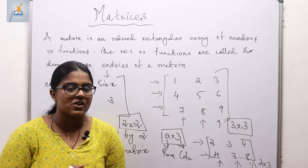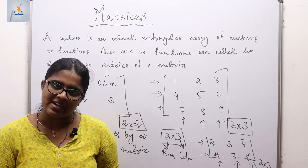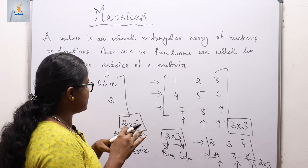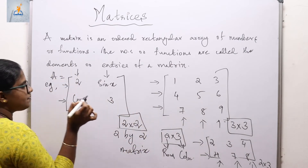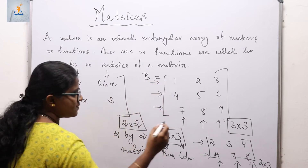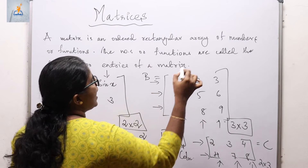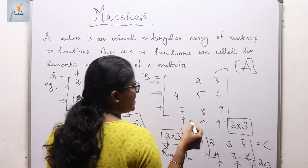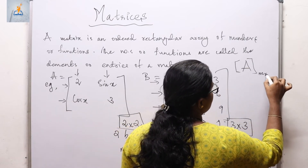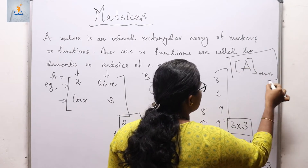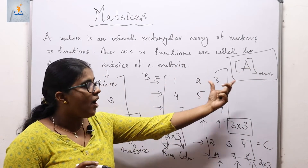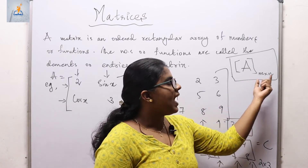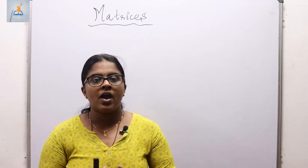Always remember: the number of rows by number of columns is called the order of a matrix. In general, we use capital letters to denote matrices — for example, matrix A, matrix B, matrix C. Any matrix A can be represented with its order as m by n, meaning A is a matrix with m rows and n columns.